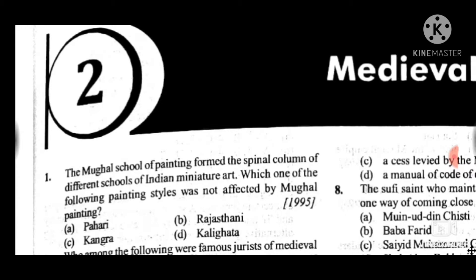The first question from the preliminary examination from 1997 is from medieval India. Question 1: Mughal Sulkula painting formed a spinal column of different schools of Indian miniature art. Which one of the following painting styles was not affected by Mughal painting? Answer to question 1 is D: Kalighat.